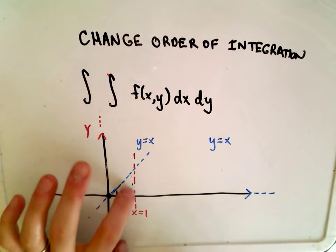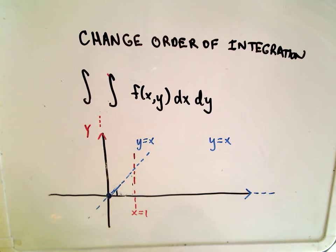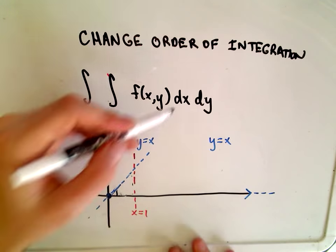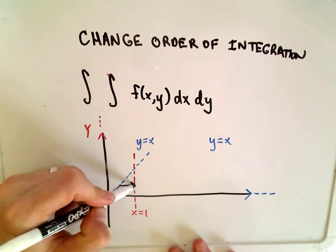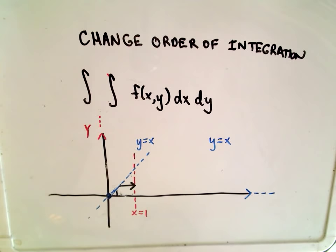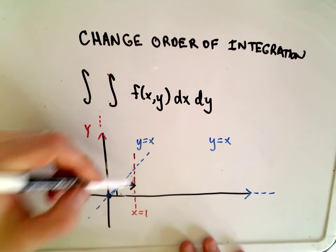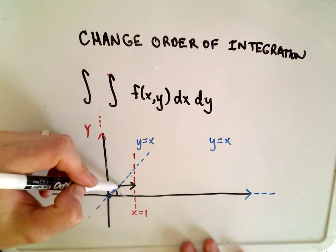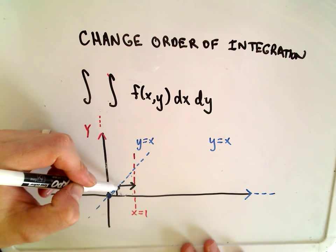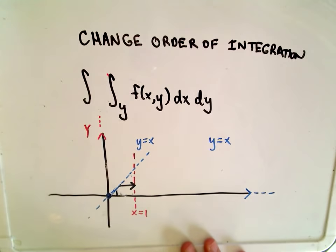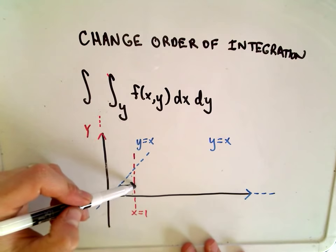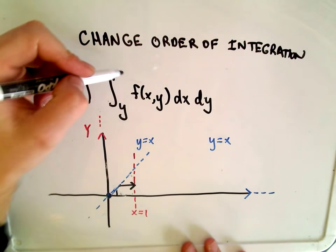Okay, so if I, again, we're talking about this triangular region. If I integrate with respect to x first, now I'm going to draw a line that's parallel to the x-axis that sits inside of my region. So now notice the first curve, the leftmost curve that it touches is the line x equals y. So that's going to become my lower limit of integration. The upper curve that it touches is x equals 1.